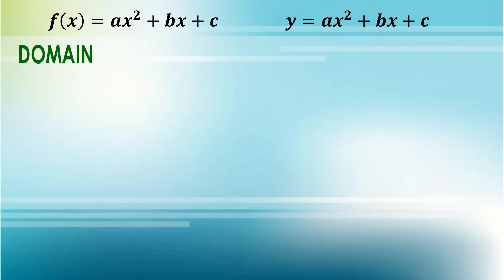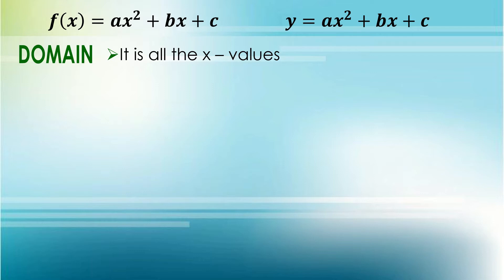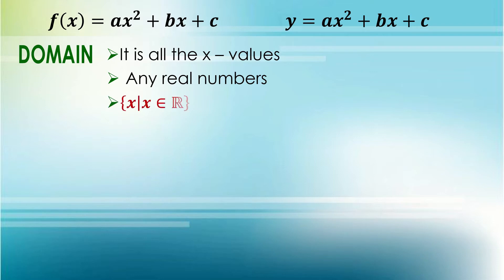Now let's find the domain and range of our quadratic function. Remember that the domain is all the x values. What are the possible values that we can substitute to our variable x for a quadratic function? Well, the domain will always be any real numbers, so we can write it in this notation form: x such that x is an element of real numbers. You can have all the values of x and there will be corresponding values of y.